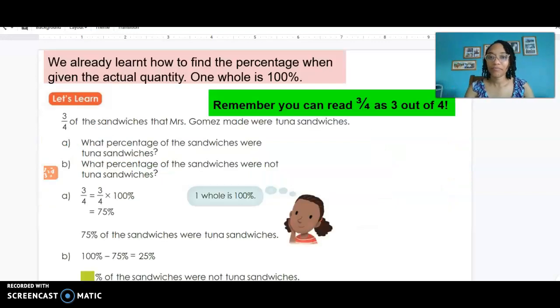We already learned how to find the percentage when we were given the actual quantity. Now we need to remember that one whole is 100%. So let's look back at this problem with sandwiches. Three-fourths of the sandwiches that Miss Gomez made were tuna sandwiches. What percentage were tuna sandwiches? What percentage of the sandwiches were not tuna sandwiches?